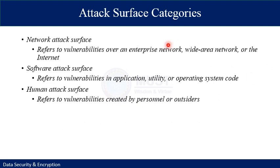Attack surfaces are categorized into three subdomains. First, network attack surface refers to vulnerabilities over an enterprise network, wide area network, or the internet, including network protocol vulnerabilities such as denial of service attacks, disruption of communication, and various kinds of intruder attacks.